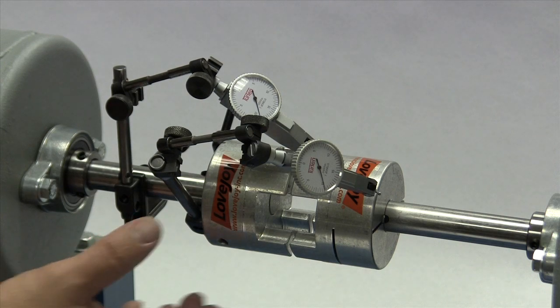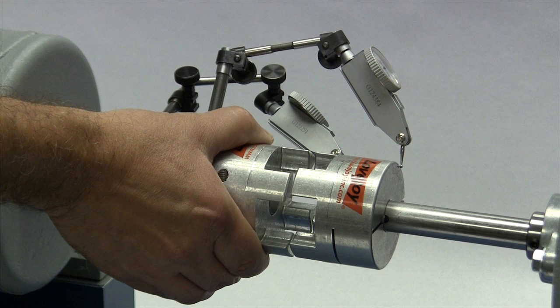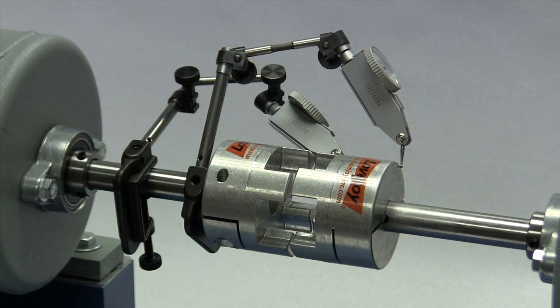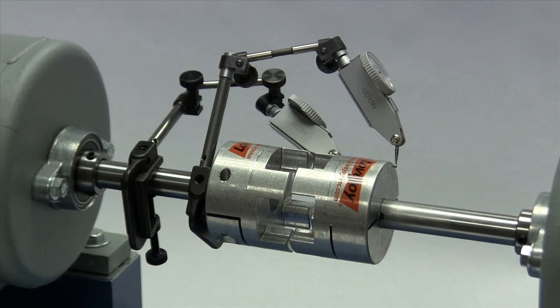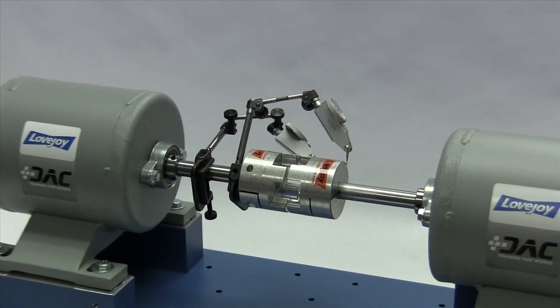Rotate the shaft with the indicator to the 3 o'clock, 6 o'clock, 9 o'clock and 12 o'clock positions and make notes of the deviation on the dial. If this exceeds 0.015, 15 thousandths of an inch, adjust the equipment to correct this condition.